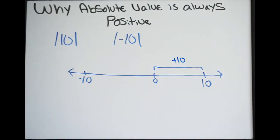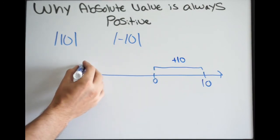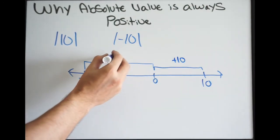Same thing with negative 10. What is the distance negative 10 is from the origin, or 0? That's going to be a distance of positive 10.